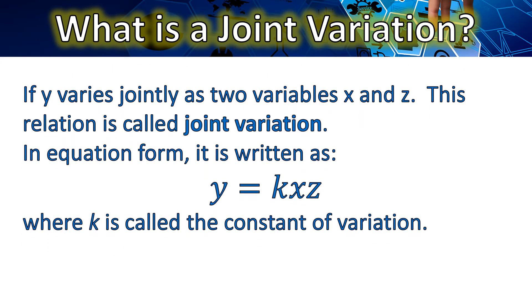If y varies jointly as two variables x and z, this relation is called joint variation. In equation form, it is written as y equals k x z, where k is called the constant of variation.